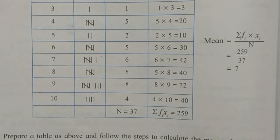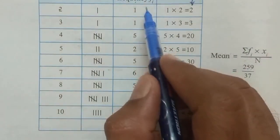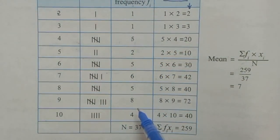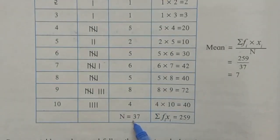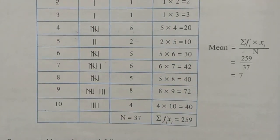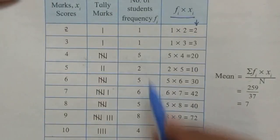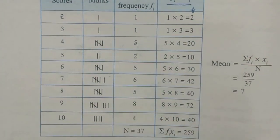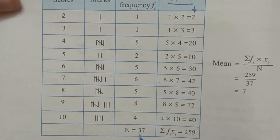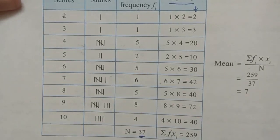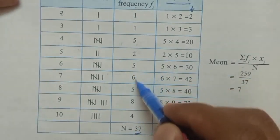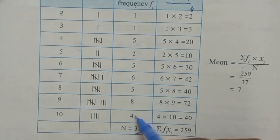The third column — number of students (frequency) — is calculated. At the bottom, N = 37 (total frequencies). Adding the frequency column: 1+1+2+5+7+9+14+20+25+33+4 = 37. Then the fourth column's sum (sigma fi×xi) = 259.